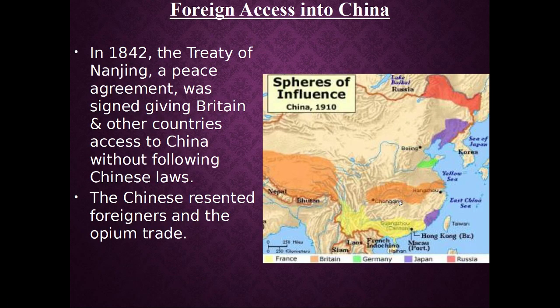So China stands no chance — they get absolutely decimated. And they are forced to sign this thing called the Treaty of Nanjing. This is a peace agreement, and because China lost the war, they have to give up a lot. They don't just give up stuff to Britain — they sign it saying that Britain and other countries are allowed to have access to China without following Chinese laws. It's this thing called extraterritoriality. You can see over here these spheres of influence that China has been broken up into.